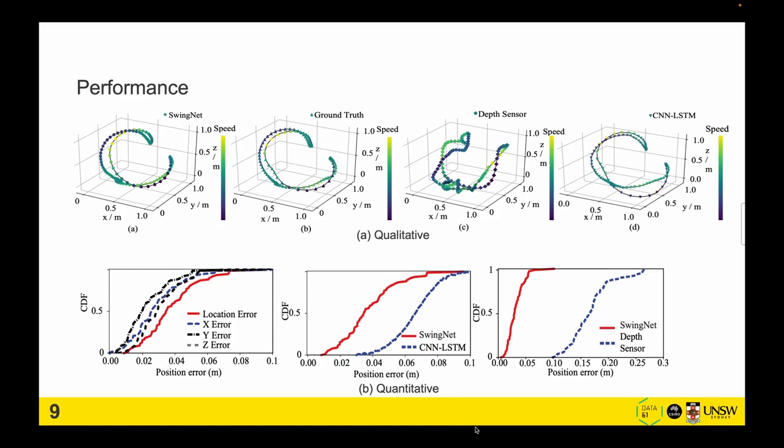And here are the results. In the qualitative figure on the upper left corner, we see that the proposed framework SwingNet is very close to the second picture of the ground truth, while in the fourth image, the CNN LSTM compared with our proposed framework is suboptimal.